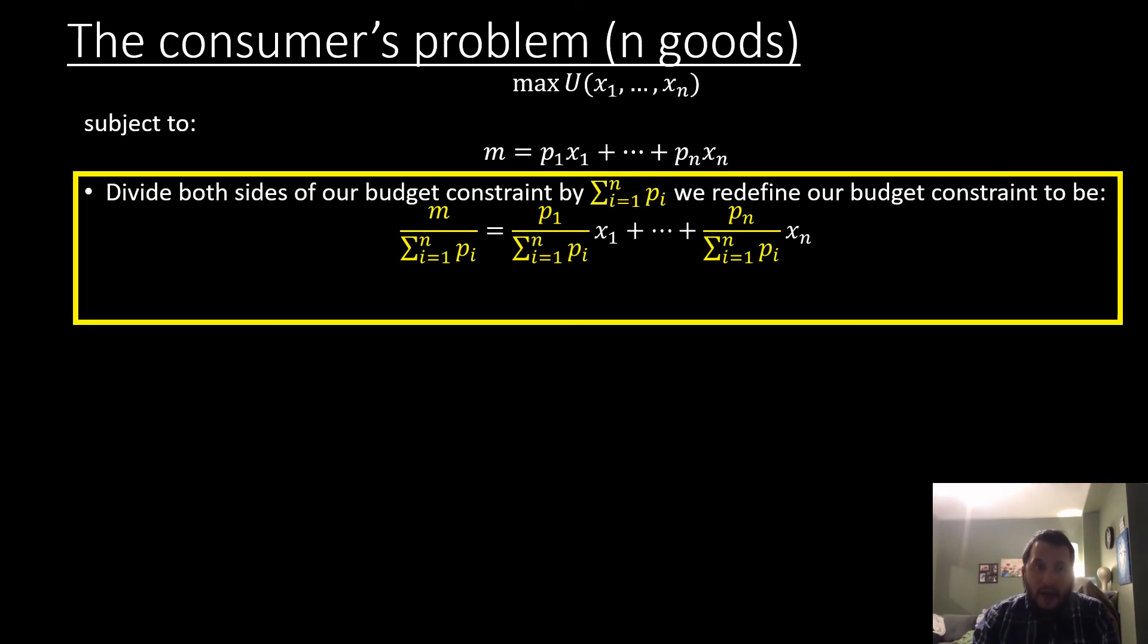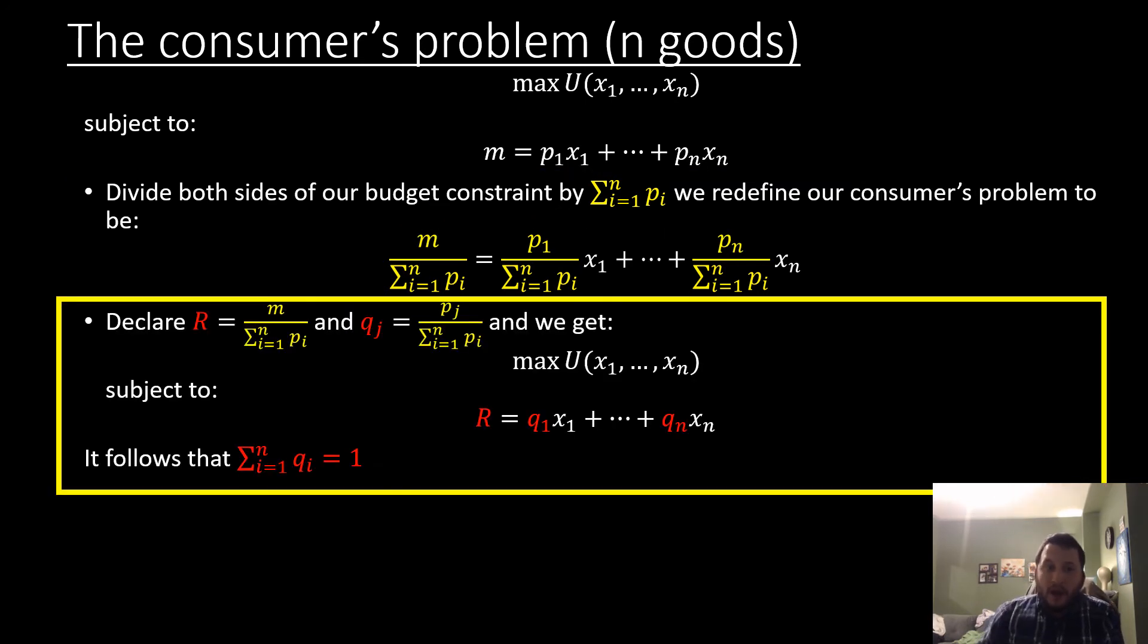We have this standard case where we have n many goods and we're going to divide both sides by the sum of all of the prices of each good in our economy. This goes and transforms our budget constraint to be the following, still keeping our optimization problem but the constraint is going to still be the same because we can recover the original one. Now we're going to declare our variables.